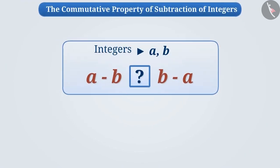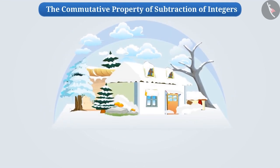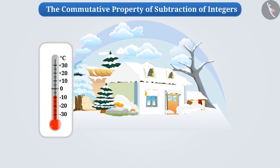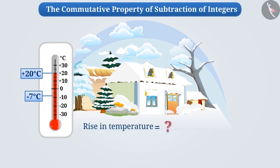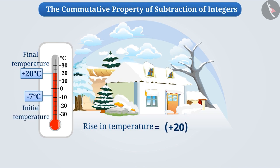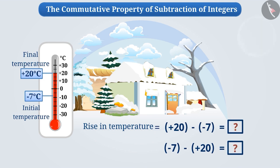Is the subtraction of integers also commutative? Suppose you have gone to Leh. The morning temperature was minus seven degrees Celsius, which rose to plus twenty degrees Celsius during the day. To find the rise in temperature, you will subtract the initial temperature, minus seven degrees Celsius, from the final temperature, plus twenty degrees Celsius. If we change the order of integers in this subtraction, will we get the same result?